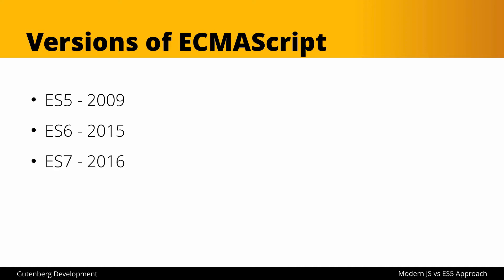ES7, 8, and 9 refer to the new features of JavaScript added in the corresponding years 2016, 2017, 2018, and so on, and this will continue every year. With ES6 there were a lot of new features released, in part because it had been so long since the last update. With subsequent years we see a few new features added each year, but not as dramatic a shift as moving from ES5 to ES6.